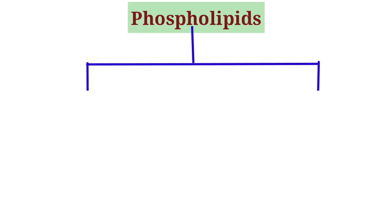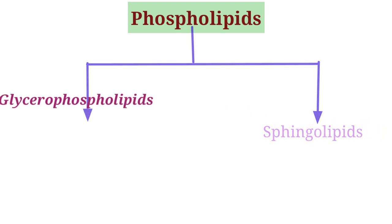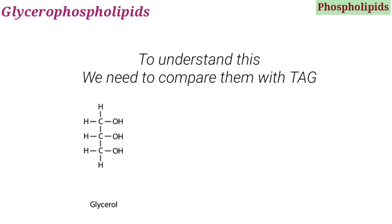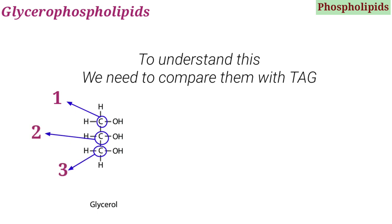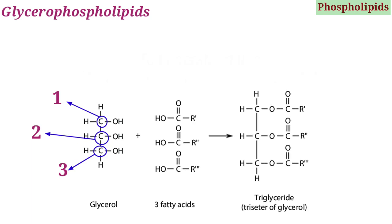Let's get started with phospholipids, using the whiteboard method. In phospholipids we have two different subtypes: glycerophospholipids and sphingolipids. Let's begin with glycerophospholipids. To understand them well, let's compare glycerophospholipids with normal lipids where glycerol is the central backbone containing three carbons — carbons 1, 2, and 3 — each linked by a fatty acid, giving us a triacylglycerol-like structure as discussed in our previous lecture.